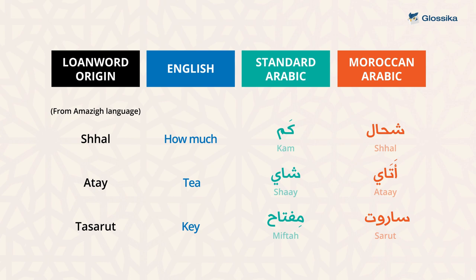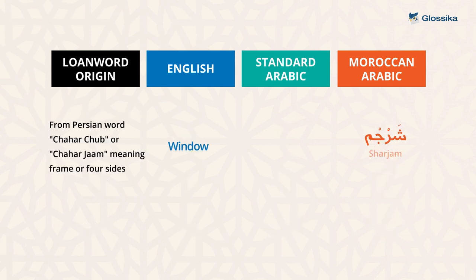And the word sharjum, which in standard Arabic is nafidha, is a loan word from Persian — tartub or tarjam — meaning frame or foresight.